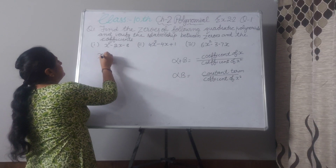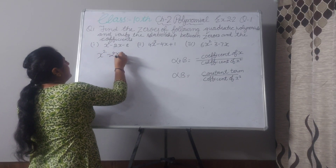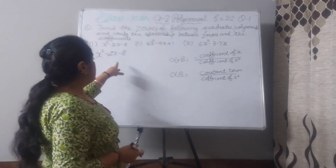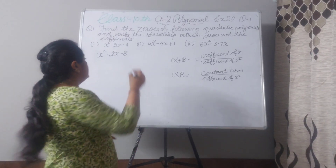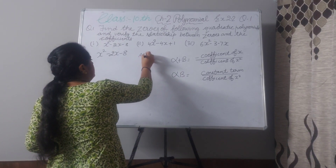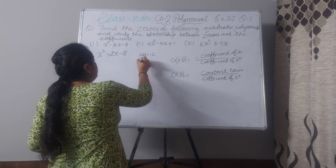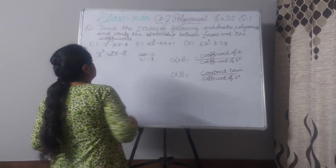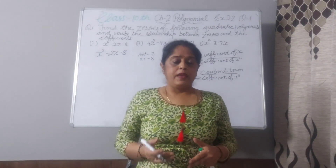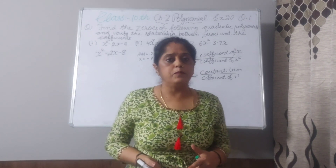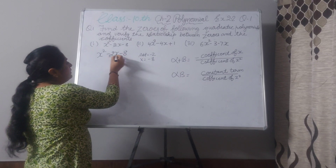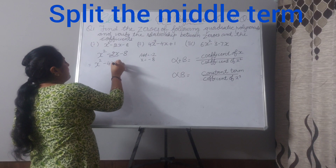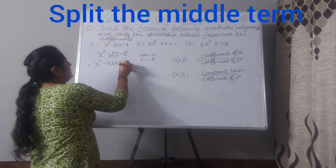x² minus 2x minus 8. We will factorize it by using split the middle term. You have to take 2 numbers such that when we add we get minus 2, but when we multiply we get minus 8. You know that 4 and 2 — 4 you have to take as minus and 2 as positive. x² minus 4x plus 2x minus 8.